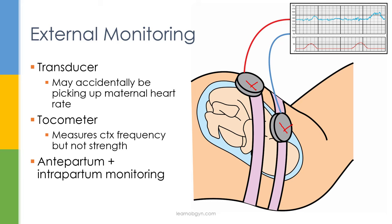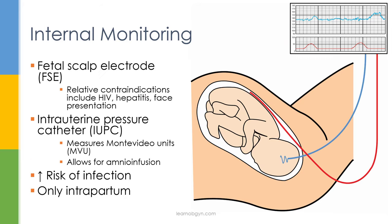The tachometer also goes on the abdomen and measures contraction frequency. Importantly, external monitoring only measures frequency — not strength. Because external monitors go on the mother's abdomen and not inside the uterus, they are used for both antepartum and intrapartum monitoring, as opposed to internal monitoring, which is only used in labor because the patient must have ruptured membranes. For internal monitoring, the heart rate can be measured directly and more precisely using a fetal scalp electrode, also known as an FSE.